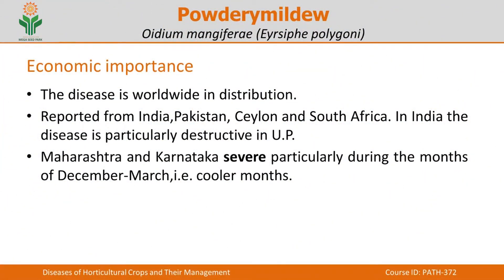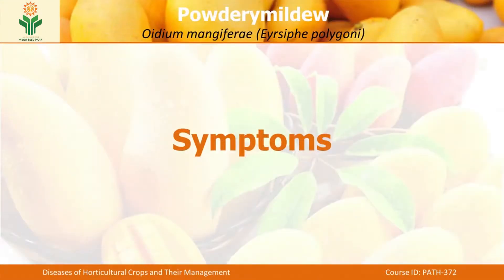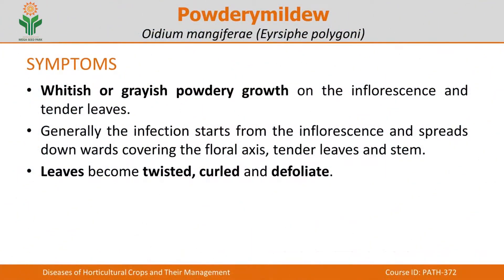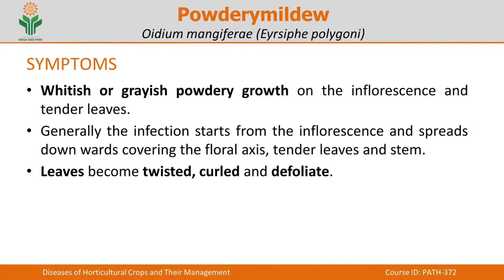Diagnosis is a very important and crucial step for any management practice. As a field officer or scientist, you have to identify the disease first. The symptom appears as a white or grayish-white powdery growth that you can observe on the inflorescence and tender leaves — all the aerial parts will be covered by this powdery mass containing conidia.